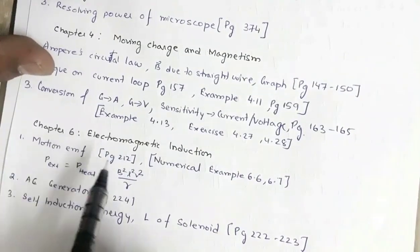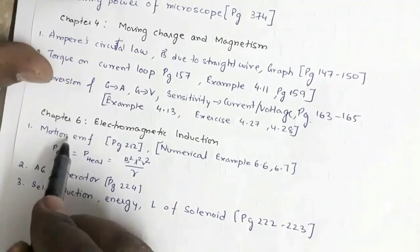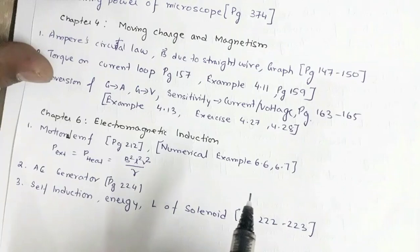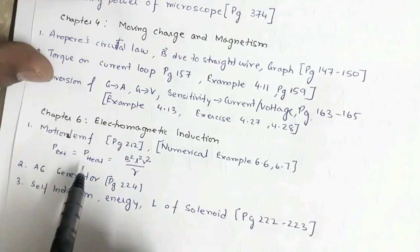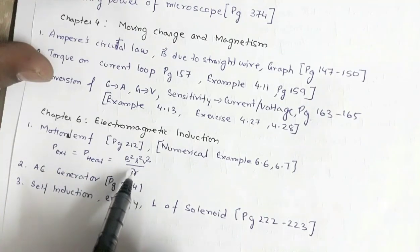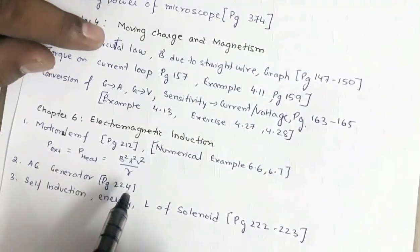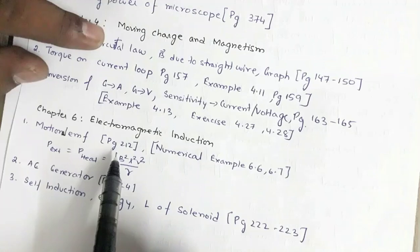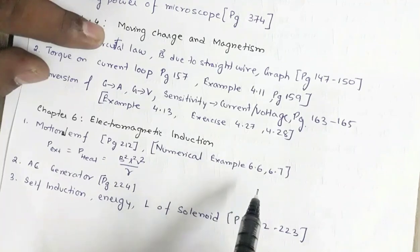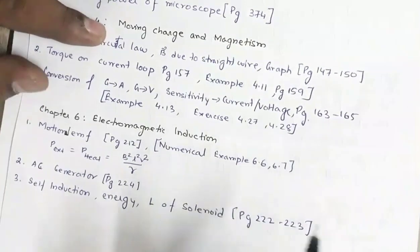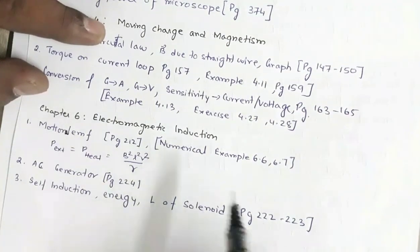Then we have Chapter 6, Electromagnetic Induction. Motional EMF is on page number 212 — the expression for motional EMF, e = Blv, its derivation, and the derivation that power supplied by external source equals power dissipated as heat, equal to B²l²v/R. This is highly important. Numerical examples 6.6 and 6.7 show how much EMF is induced when a conductor moves in a magnetic field. There may be a three marks theory part plus two marks numerical on motional EMF.